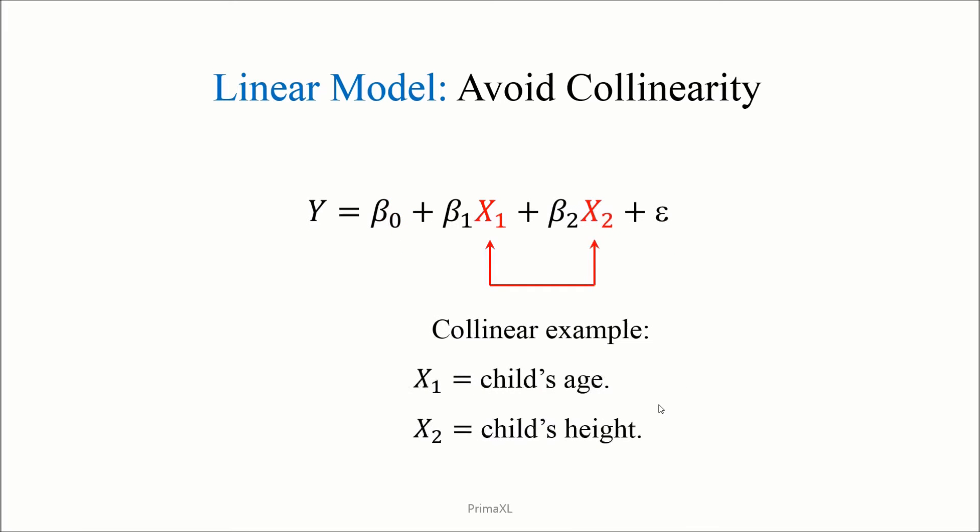For example, if x1 is a child's age and x2 is a child's height, they both would be correlated and we could possibly have the collinearity problem. On the other hand, if x1 is a person's height and x2 is the annual income, it doesn't seem likely that there is a strong correlation. Thus, we will not have the collinearity problem.